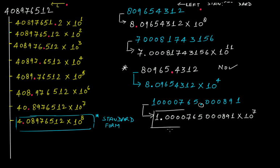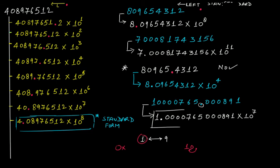One important point: the first digit in the standard form will always be starting from 1 to 9. It can be 1, 2, 3, 4, 5, 6, 7, 8, or 9 — it cannot be zero, and it cannot be 10 either, because as soon as it becomes 10-point-something, you would need to move the decimal point again towards the left. So the first digit ranges from 1 to 9 only.